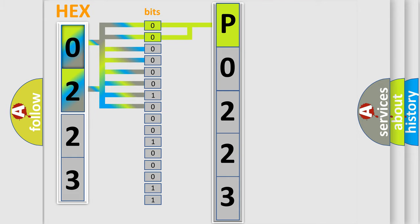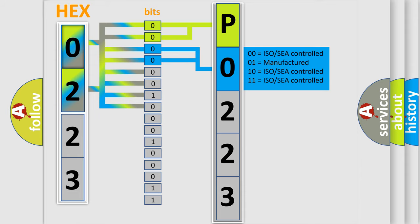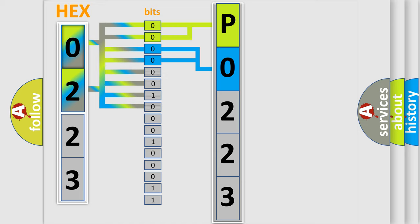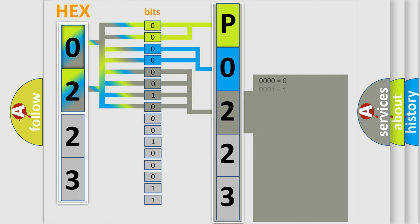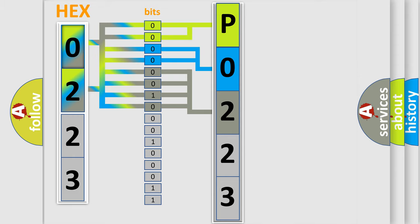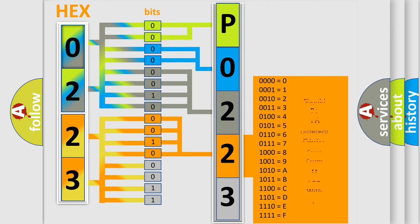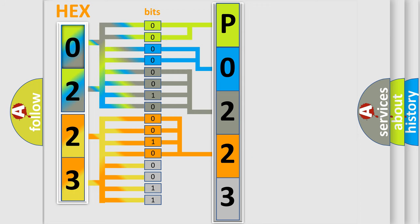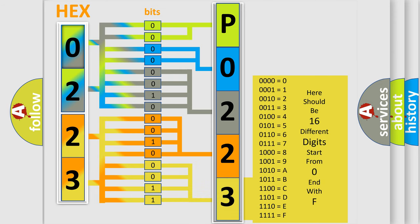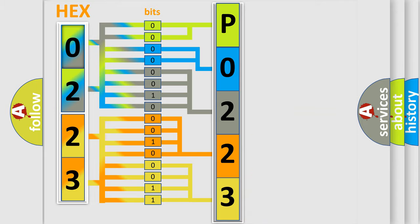The next two bits determine the second character. The last bit styles of the first byte define the third character of the code. The second byte is composed of a combination of eight bits. The first four bits determine the fourth character of the code, and the combination of the last four bits defines the fifth character. A single byte conceals 256 possible combinations.